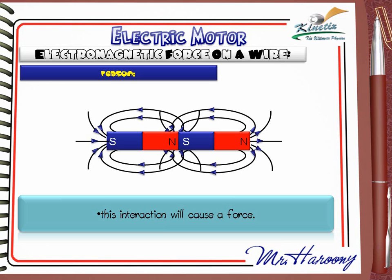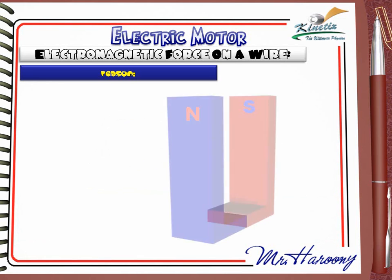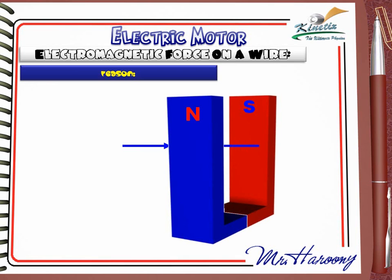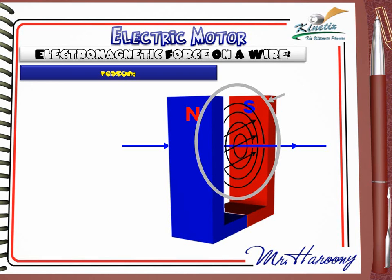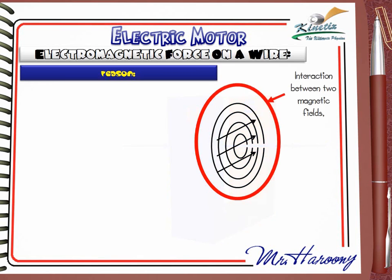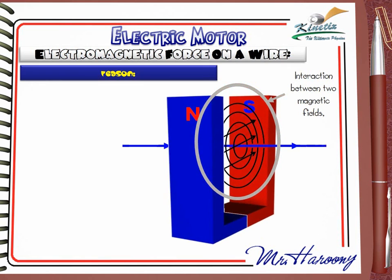From this experiment we can conclude that any overlap between two magnetic fields will cause interaction between them, and this interaction will cause a force. Going back to our case: we have the two poles of a magnet and a wire. There is a natural magnetic field between the poles. When current flows in the wire, it generates a magnetic field. In this region there is an overlap between two magnetic fields, just as if they were two magnets.